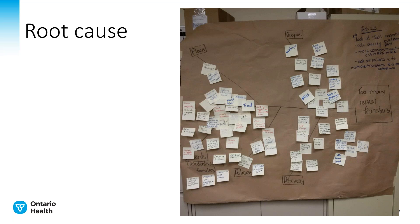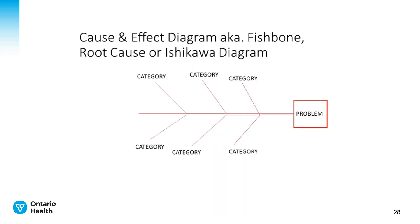This picture is a real-life root cause done with frontline staff at an organization. Each yellow post-it note is a possible root cause focused on the problem of too many repeat transfers, which you see in the box on the right. In your QIP you will be looking at what is contributing to your performance on a particular indicator so that you can then select what you will do to improve — your change ideas and your process measures.